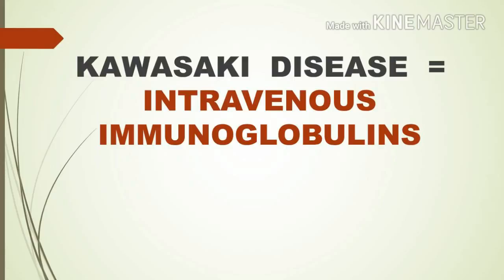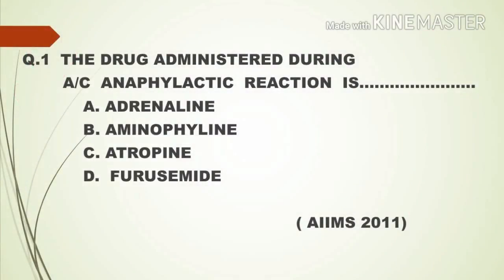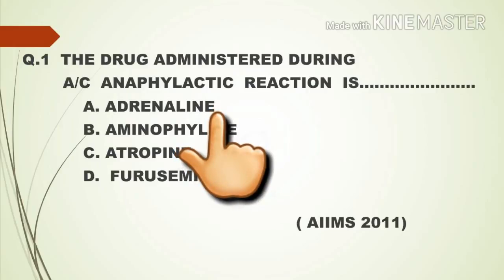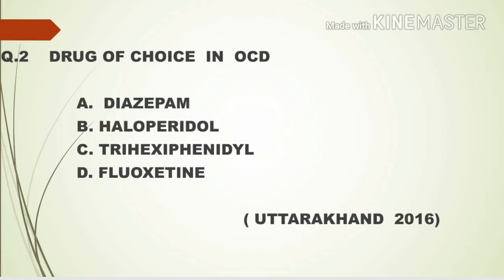Next we are going to discuss questions asked in various competitive nursing examinations. The first question: the drug administered during acute anaphylactic reaction is — a) adrenaline, b) aminophylline, c) atropine, d) frusemide. Option A, adrenaline, is the right answer. Second question: drug of choice in obsessive-compulsive disorder — a) diazepam, b) haloperidol, c) trihexyphenidyl, d) fluoxetine.